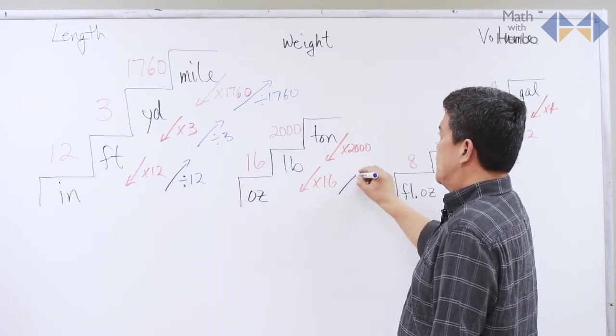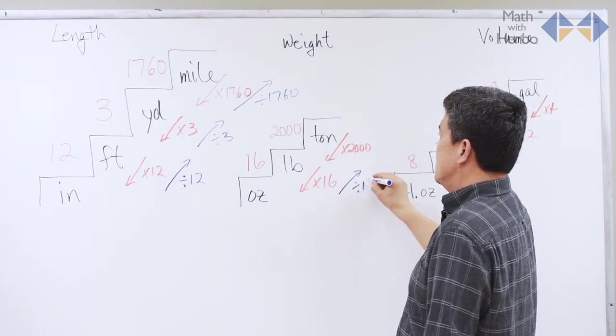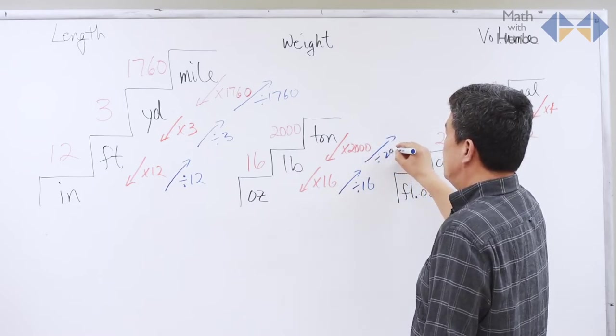Similarly here, ounces to pound, divide by 16. And pound to ton, divide by 2,000.